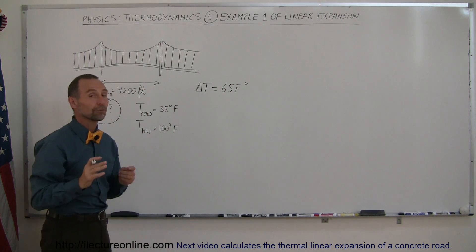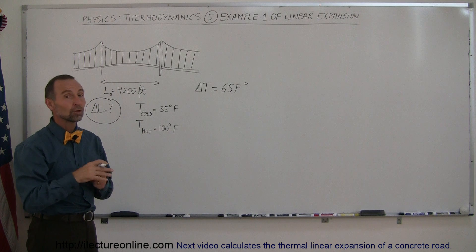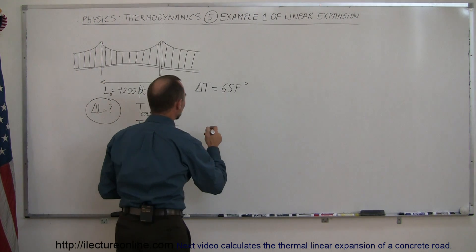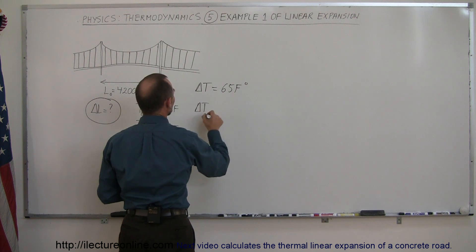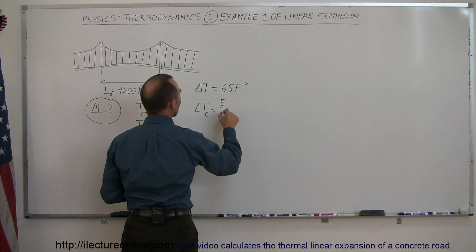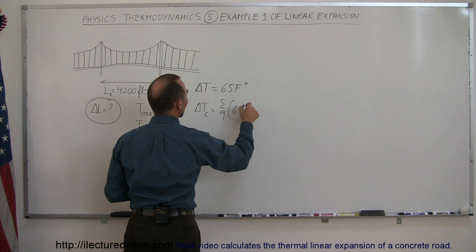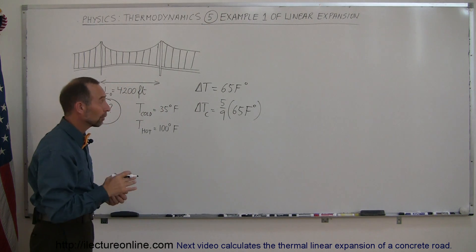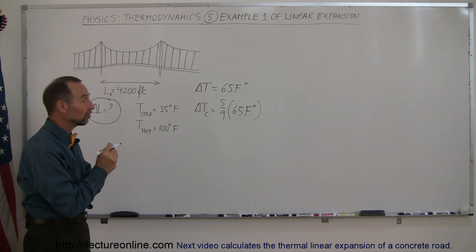So we're going to convert from Fahrenheit degrees to centigrade degrees. And of course, the difference there is a factor of 9 over 5. So the delta T in centigrade is equal to 5 over 9 times 65 Fahrenheit degrees. Now notice that I'm not adding or subtracting 32 because I just want to see the difference in the temperature, so the 32 here doesn't matter.